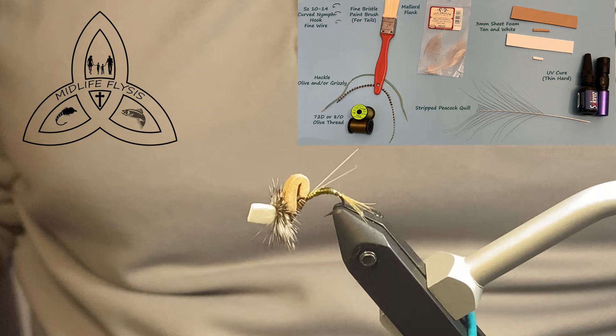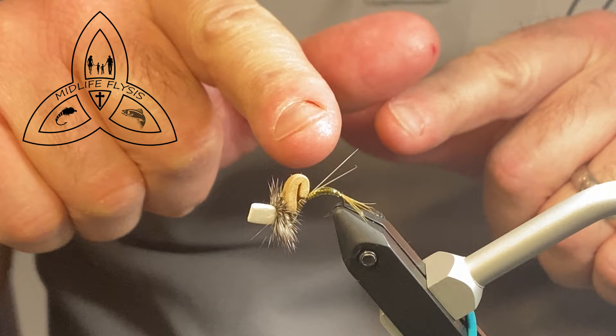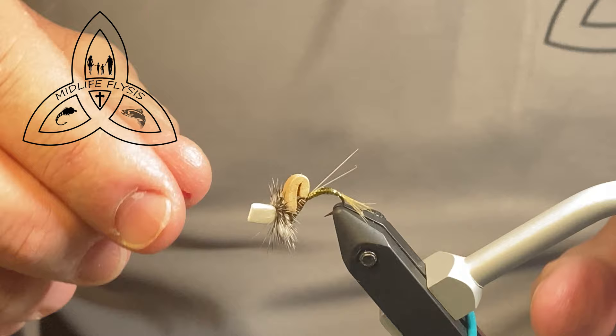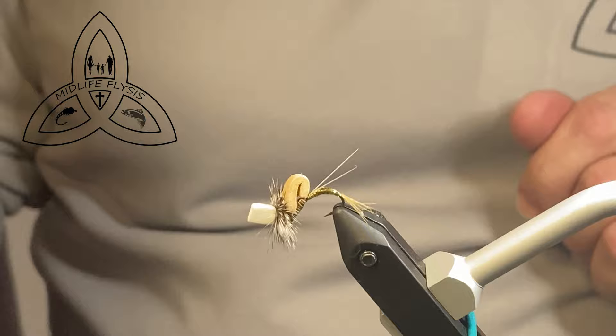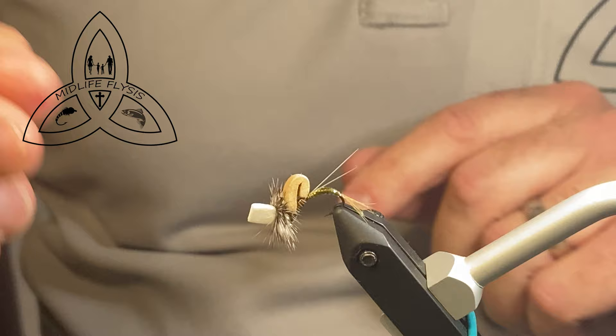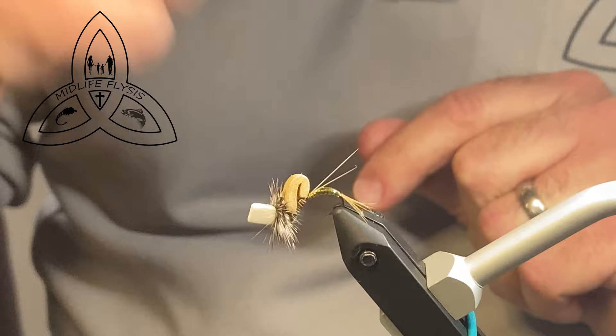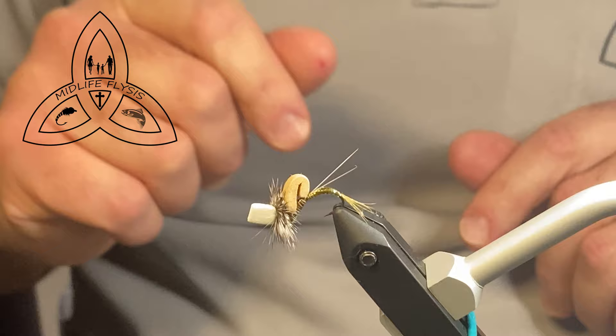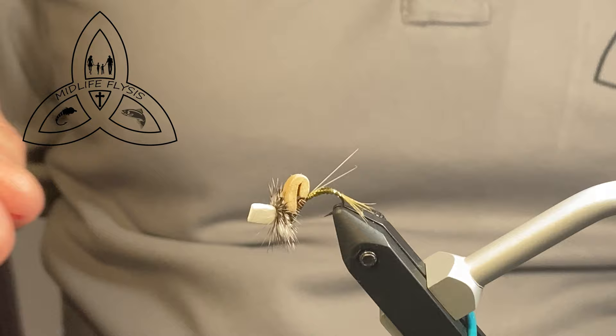This one here is a size 12, but I'm going to tie a size 10 just because it's a little bit easier to see everything. And I'm tying on my new vise, got myself a Renzetti Traveler 2200, and I am loving it. Got this one at the fly shop I guide through, Outfly Fishing in Calgary. Head on in there if you're in the area and you're looking for a new vise. Talk to Josh or Andrew or Ty, and they'll all give you a hand.